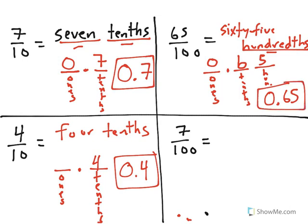Using that same logic here, we have 7 hundredths. So, again, we're going to have 0 in the ones place, and then we'll have our tenths place and our hundredths place.